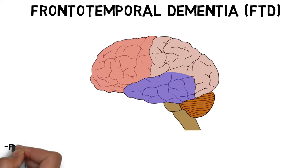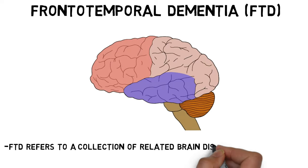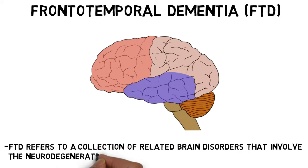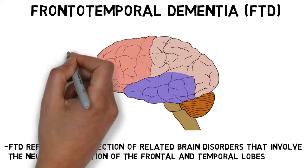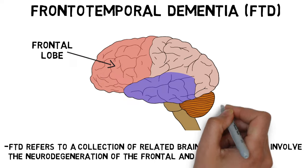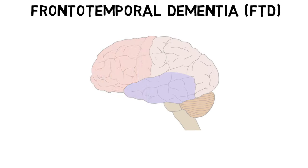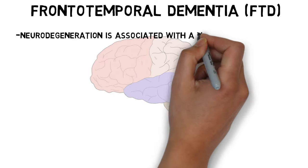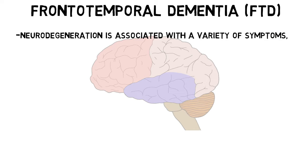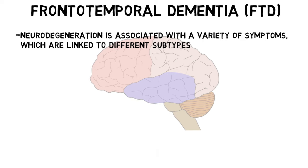Frontotemporal dementia, or FTD, is a term used to describe a collection of related brain disorders that involve the neurodegeneration of the frontal and temporal lobes. The neurodegeneration in FTD is associated with a variety of symptoms, and different presentations of symptoms have been used to establish multiple subtypes of FTD.